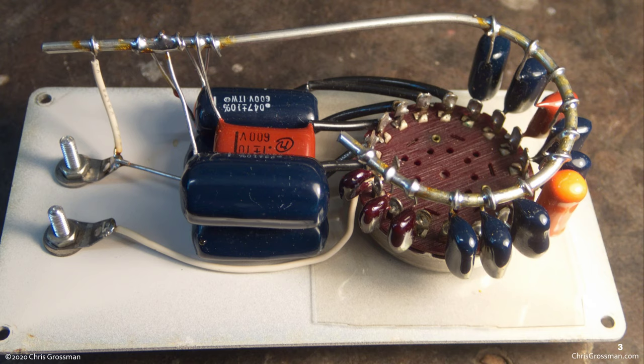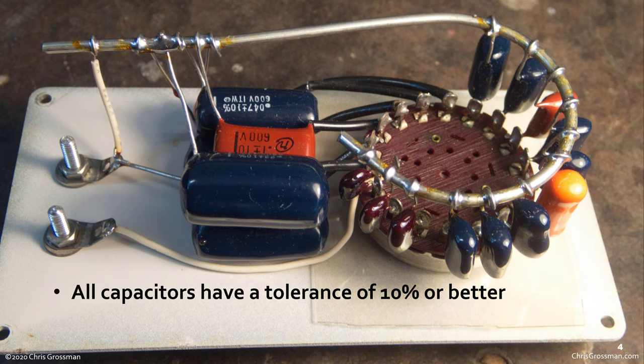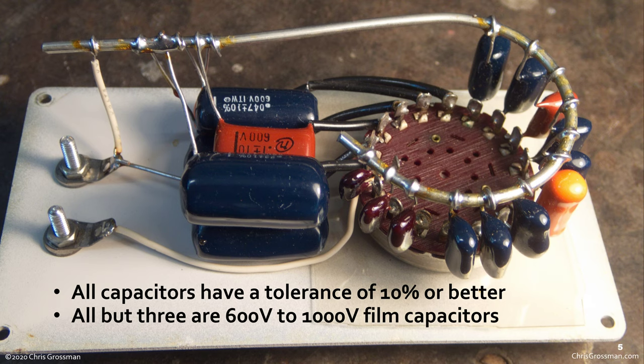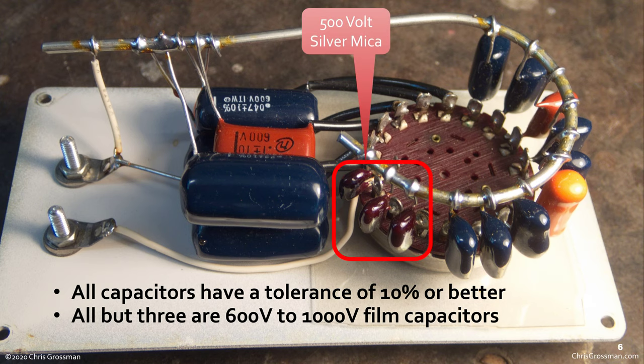Inside you can see whoever built it did a fairly nice job of assembling it. They didn't remove the flux, but it seems to be well constructed. All the capacitors have a tolerance of 10% or better. All but three of the capacitors are 600 to 1000 volt film capacitors, so there should be very little voltage dependence of the capacitance on applied voltage.